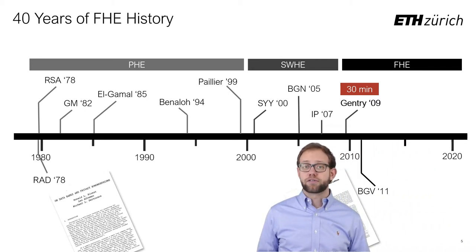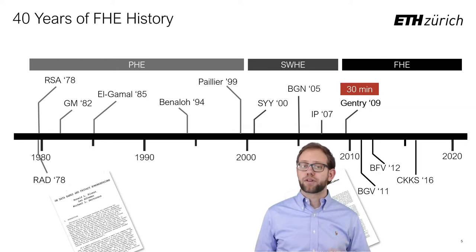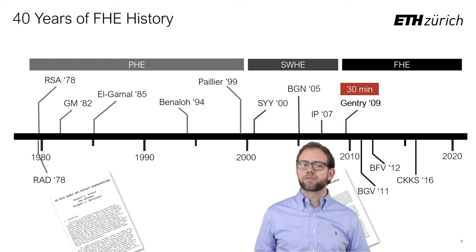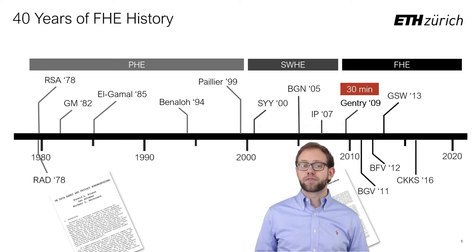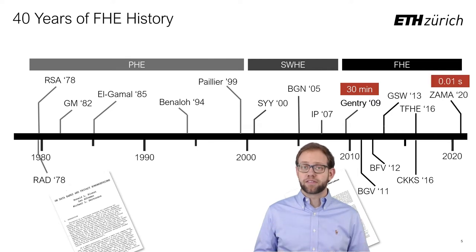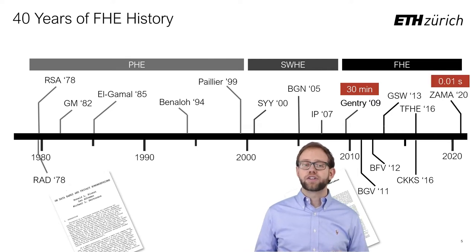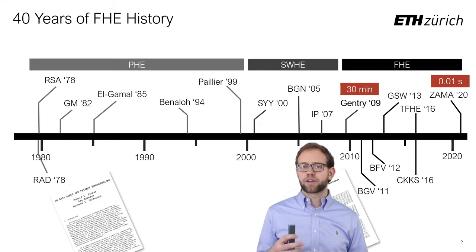Second-generation schemes emerged and traded off some theoretical expressiveness for impressive practical performance gains, bringing multiplication times down to seconds rather than minutes. Finally, recent third-generation schemes have brought multiplication times down into the range of a few tens of milliseconds. Today, FHE is practical for a wide set of applications, and performance is no longer the major barrier to adoption.